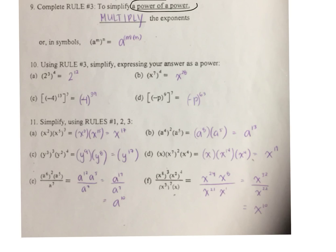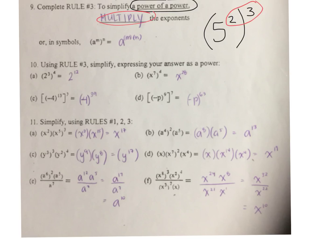To simplify a power of a power — a power of a power means you're taking a power and raising it to another power. For example, 5 to the power of 2 to the power of 3 — this would be read as 5 to the power of 2, to the power of 3. When we have a power of a power, we multiply the exponents. Write the base, then multiply the exponents.